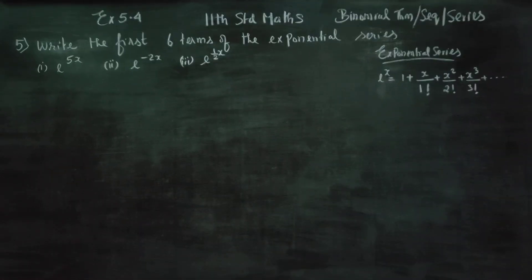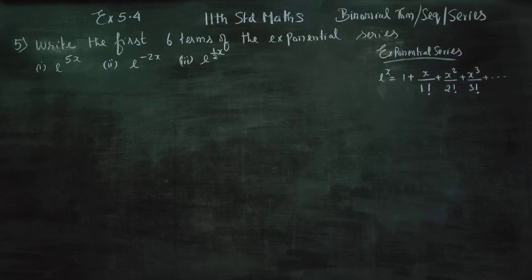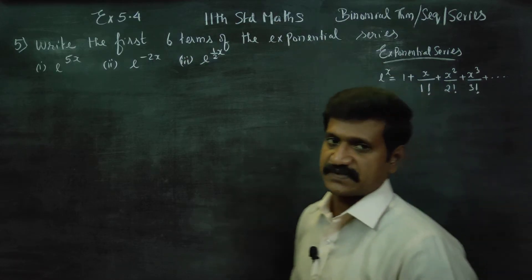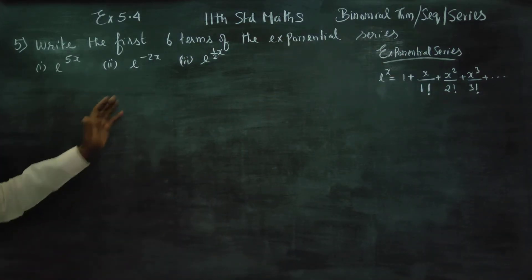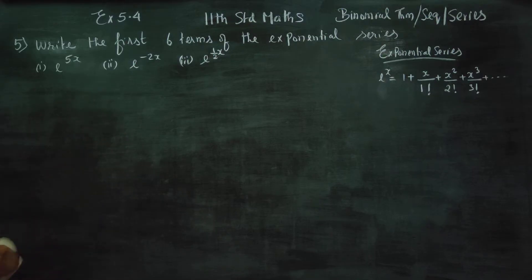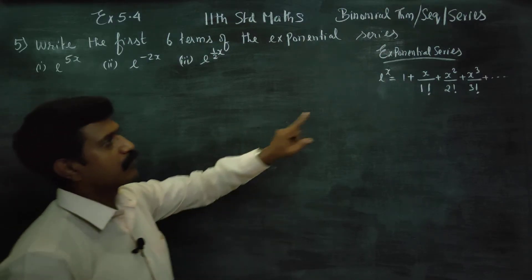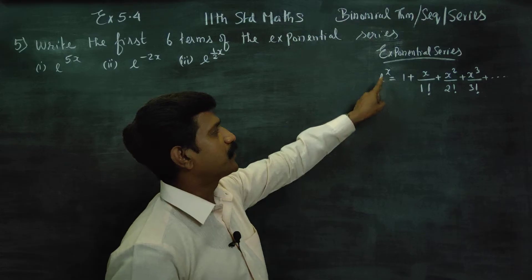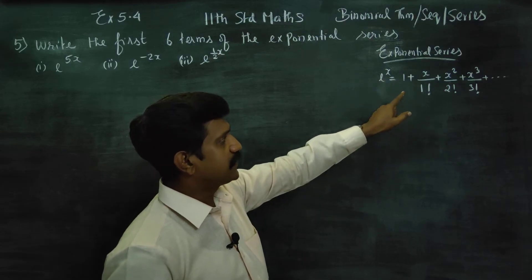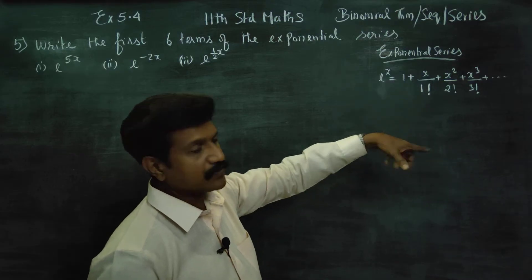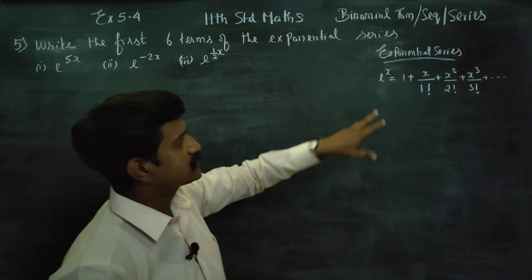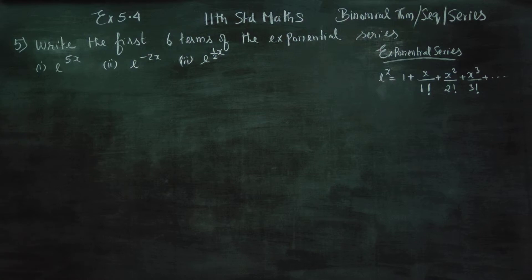Dear 11th standard students, I am Metro Karanagaran. In exercise number 5.4, sum number 5, we need to write the first six terms of the exponential series. The formula for the exponential series is: e power x is equal to 1 plus x by 1 factorial plus x square by 2 factorial plus x cube by 3 factorial, and it goes on.